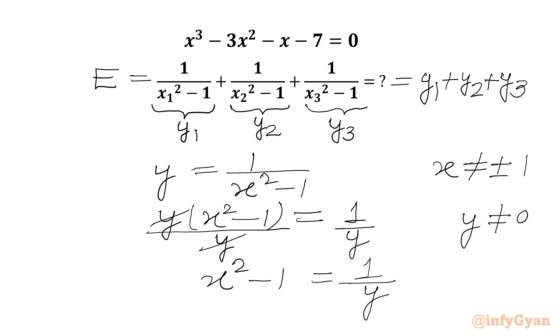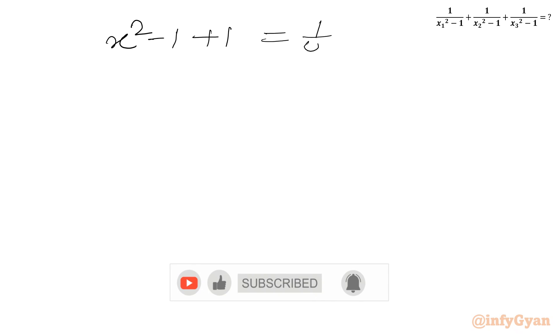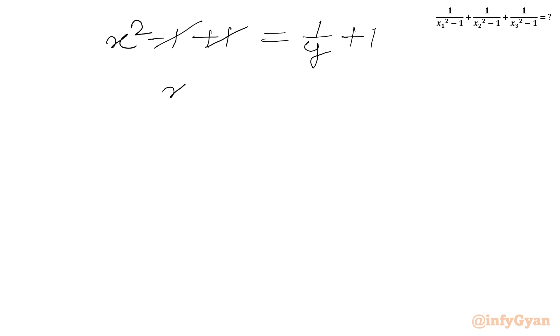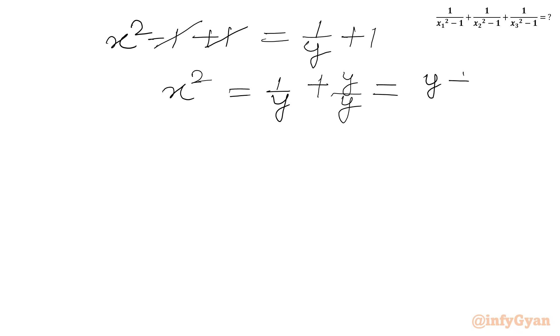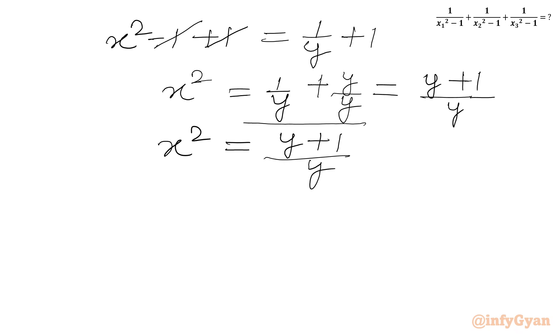Adding 1 to both sides: x² - 1 + 1 equals 1/y + 1, so the minus 1 and plus 1 cancel. We get x² equals (y + 1)/y. We will call this equation number 1.